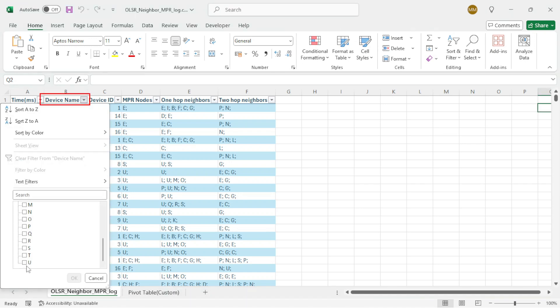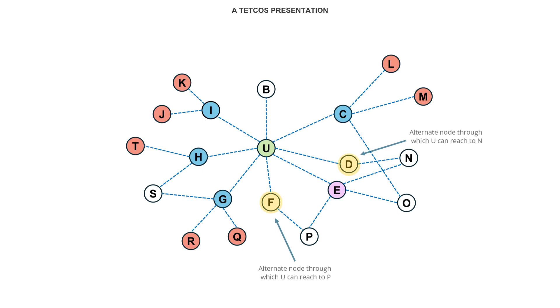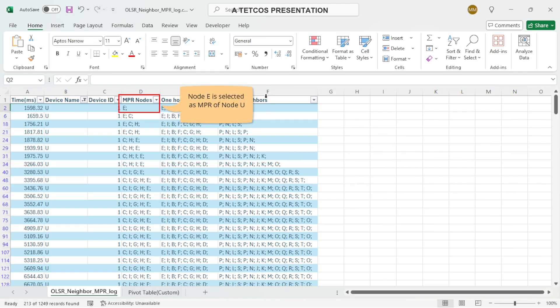Now, filter the Device Name column to U. In the log file, we see that the 1 hop neighbor set selected for node U includes E, I, B, F, C, and G. At the very beginning, the 2 hop neighbor set consists of nodes P and N. While there are other nodes through which node U can reach P or N, node E is the only node through which both P and N can be reached simultaneously, giving it a higher degree of connectivity. Therefore, node E is selected as the MPR for node U. This is reflected in the log file.